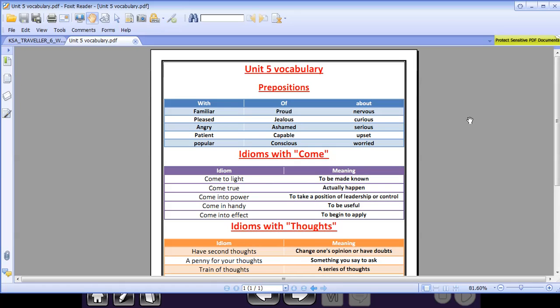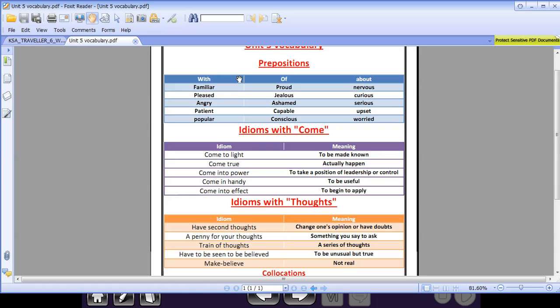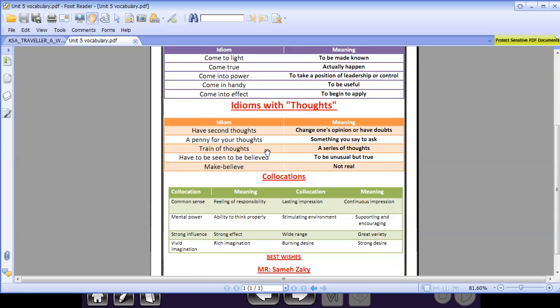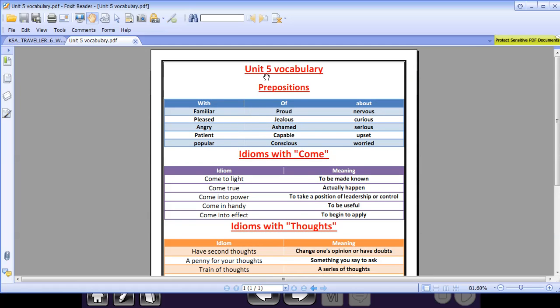Assalamu alaikum warahmatullahi wabarakatuh. How are you my dear students? Welcome back with our weekly videos about our course Traveler 6. This week I decided to practice more on what we have studied on Unit 5. Let's start with Unit 5 vocabulary. Now we are going to have a look on this summary paper which I prepared especially for you. This paper is about Unit 5 vocabulary starting from prepositions with of and about.